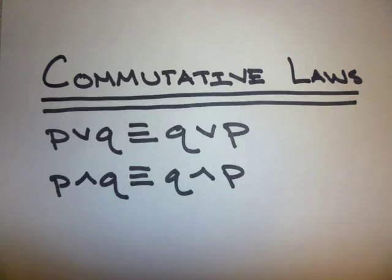The commutative laws: P or Q is logically equivalent to Q or P. P and Q is logically equivalent to Q and P.